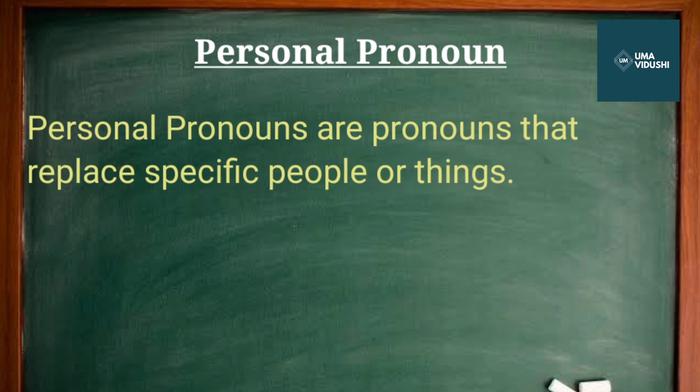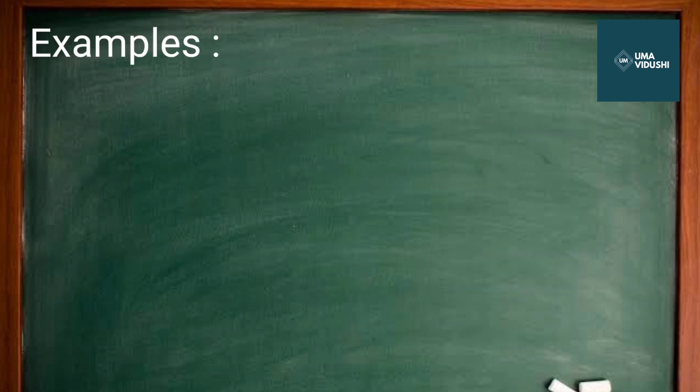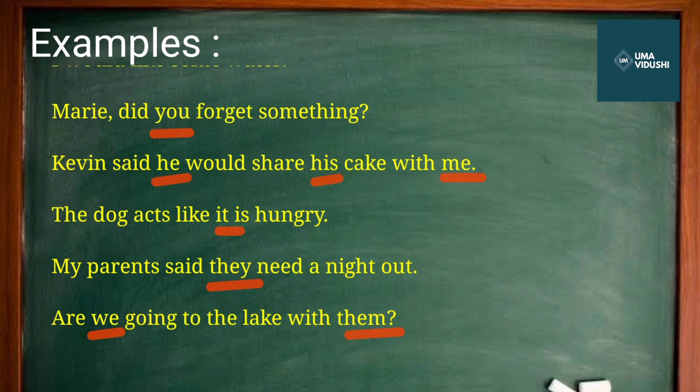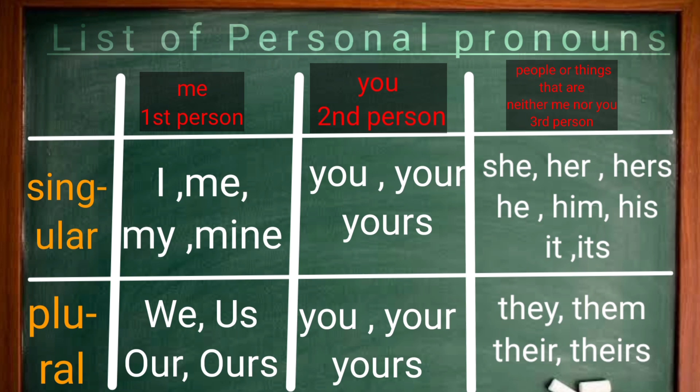Personal pronouns are pronouns that replace a specific person or thing. She and her are known as personal pronouns. The other personal pronouns are I, me, you, he, him, it, we, us, and so on. Now have a look at some examples here — all the highlighted words are examples of personal pronouns. Let's see a brief flowchart description of the list of personal pronouns. You can pause your video and read all the pronouns carefully.